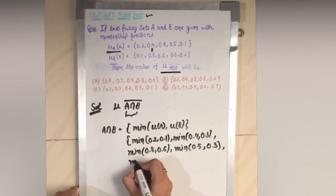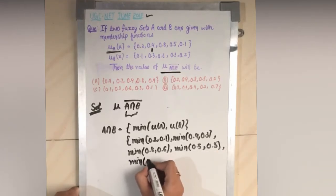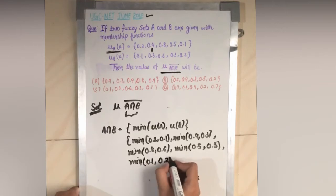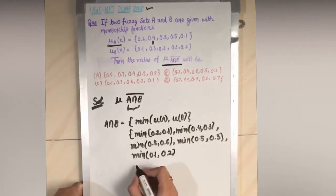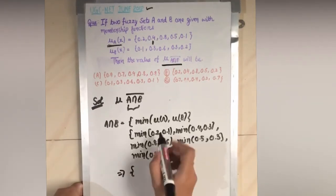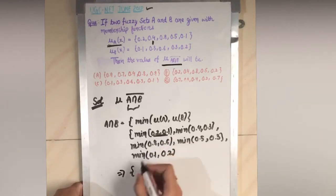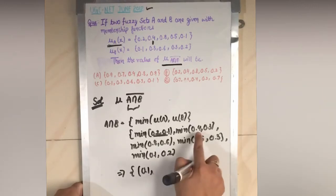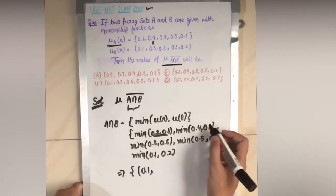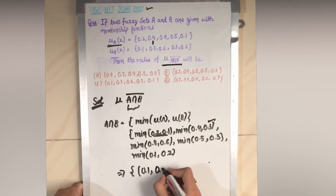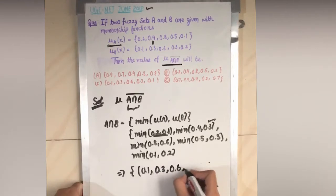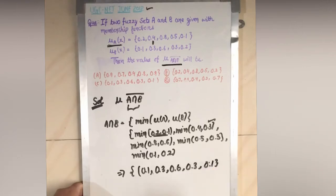The last element is 0.1 and 0.2 — minimum is 0.1. So the intersection values are: 0.1, 0.3, and continuing — 0.4 and 0.3 gives 0.3; 0.8 and 0.6 gives 0.6; 0.5 and 0.3 gives 0.3; and 0.1 and 0.2 gives 0.1.